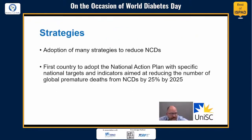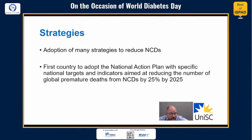India has adopted many strategies to reduce NCDs, though it is beyond the scope of this presentation to discuss all of them. From a PEN Plus perspective, in response to the WHO Global Action Plan for the Prevention and Control of NCDs 2013–2020, India was the first country to adopt a national action plan with specific national targets and indicators aimed at reducing the number of global premature deaths from NCDs by 25 percent by 2025.